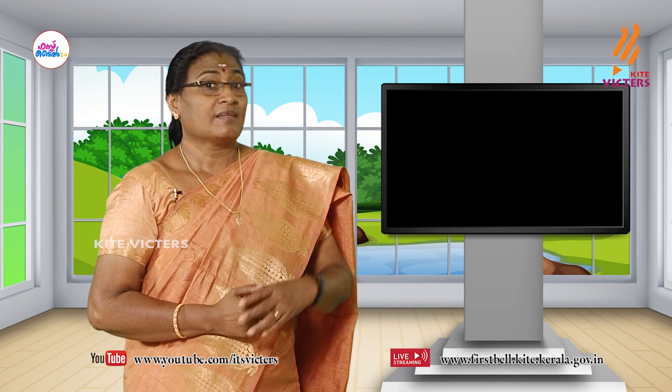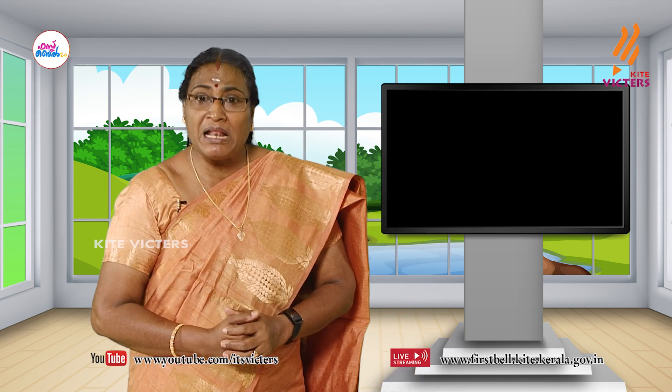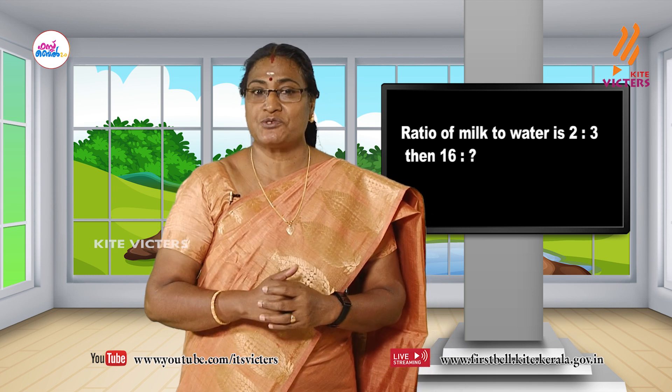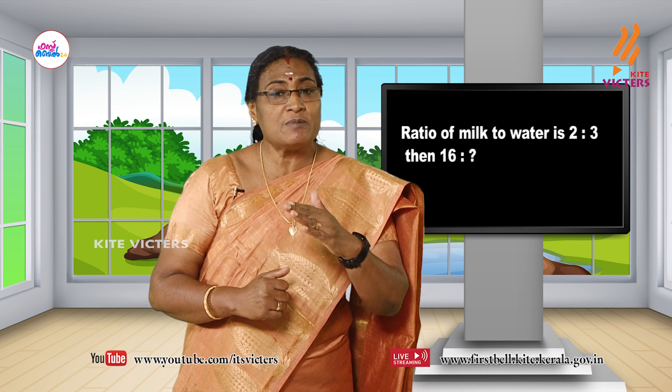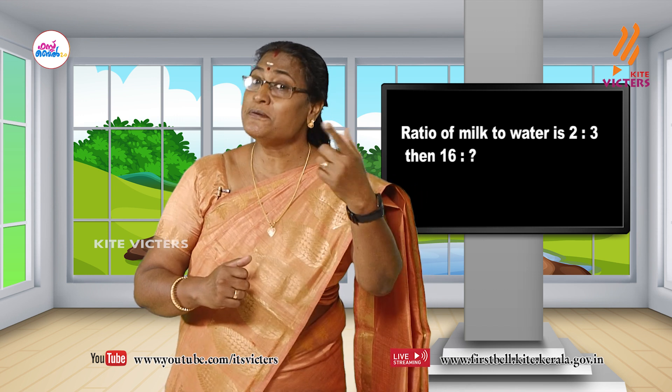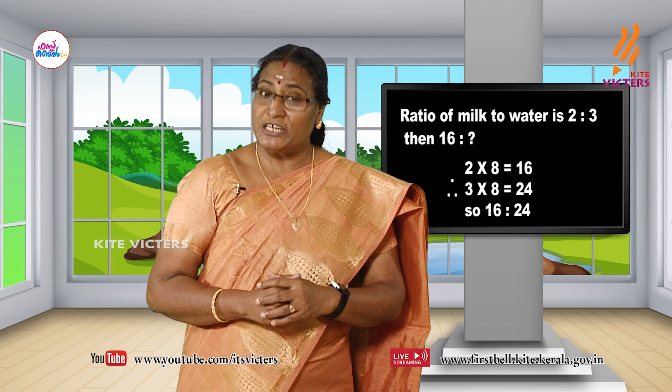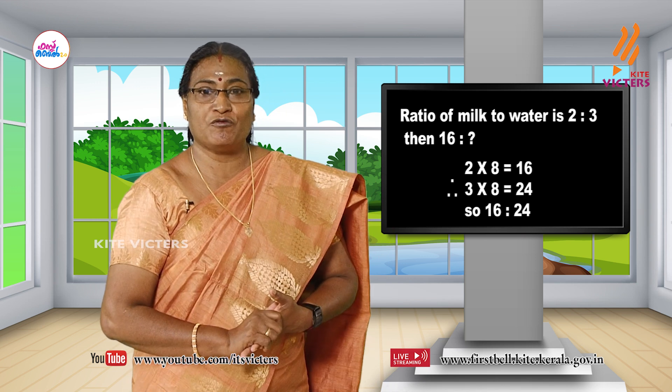How about making tea? If 2 cups of milk and 3 cups of water is needed to prepare 5 cups of tea, then how much water is needed for 16 cups of milk? Let us see the ratio of milk to water, that is 2 is to 3. Then 16 is to how much? 16 is 8 times of 2. Hence, we must take 8 times of 3 water, that is 24. So we can write 16 is to 24. The ratio between milk and water varies from house to house depending on preference.